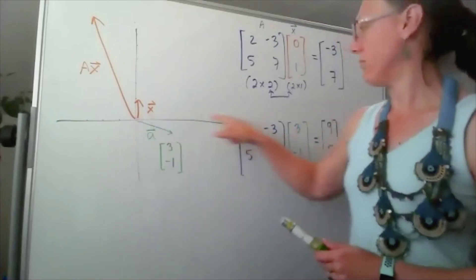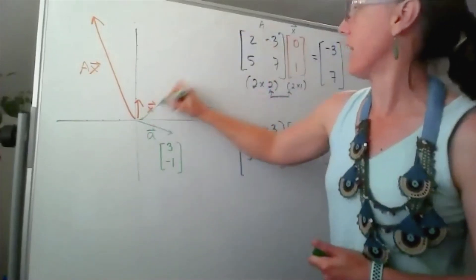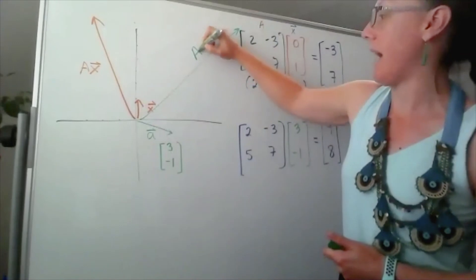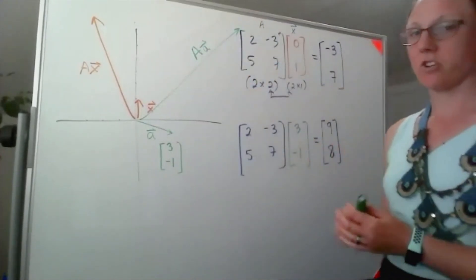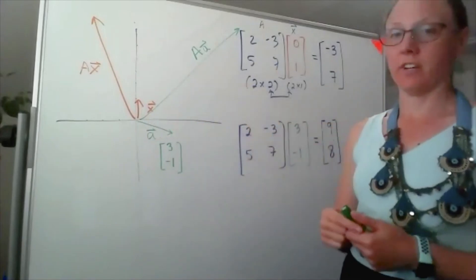So 9 over here, 8 up here, I'm just going to fake it and say that would be A times A. So it took this vector and turned it into that one.